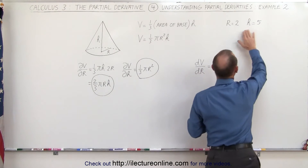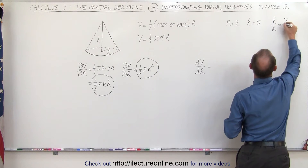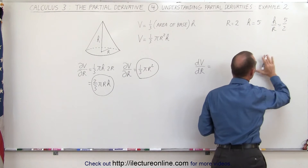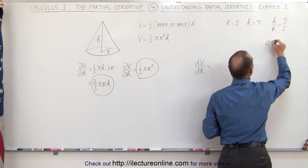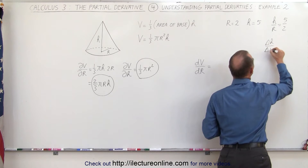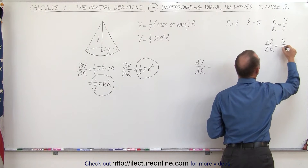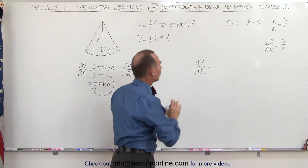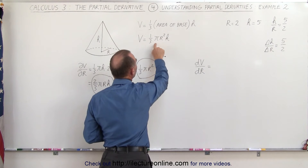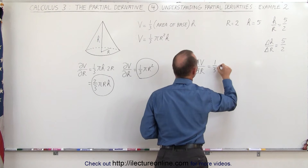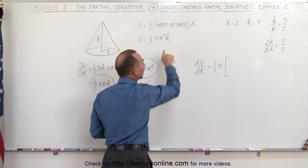Notice the proportion between h and r: h divided by r is equal to 5 divided by 2. This means that the change in h divided by the change in r has the same ratio as the original dimensions, which is 5 divided by 2. We'll keep that in mind when we take the derivative. Notice that when we take the derivative, only one-third and pi are constants, so we write one-third times pi times the derivative of the product r squared times h.